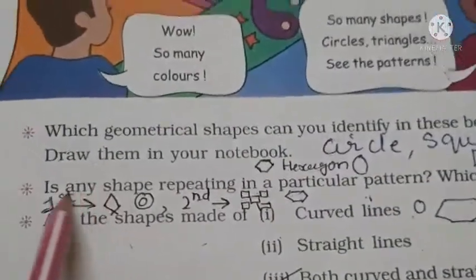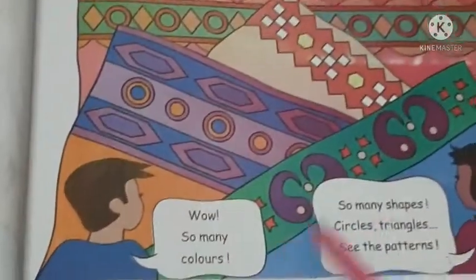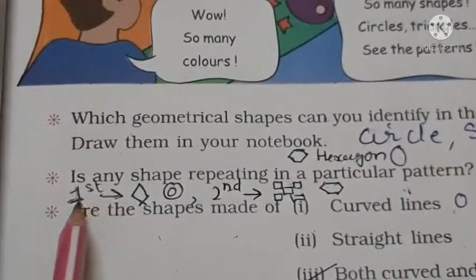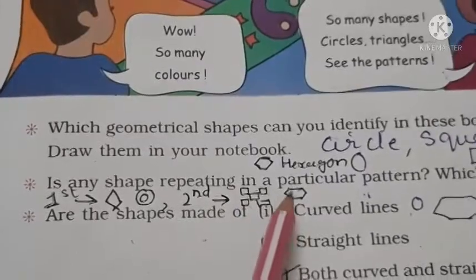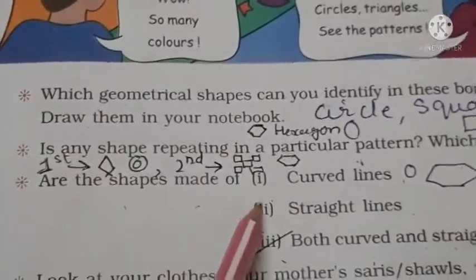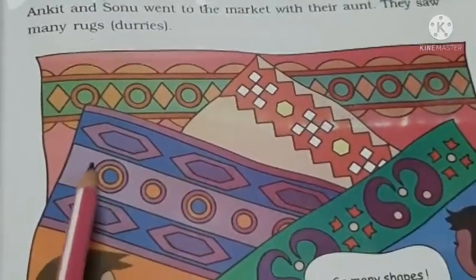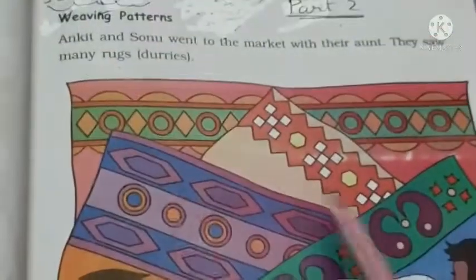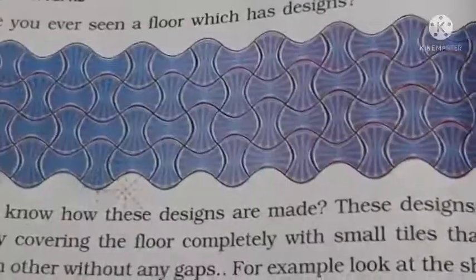Now, is any shape repeating in a particular pattern? Which ones? Yes. The first pattern is diamond and circle, and the second pattern has square and hexagon. Are the shapes made of curved lines, straight lines, or both curved and straight lines?